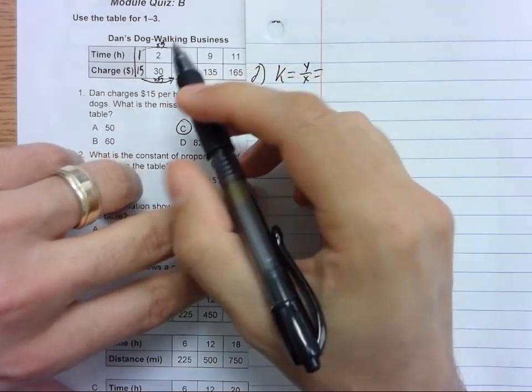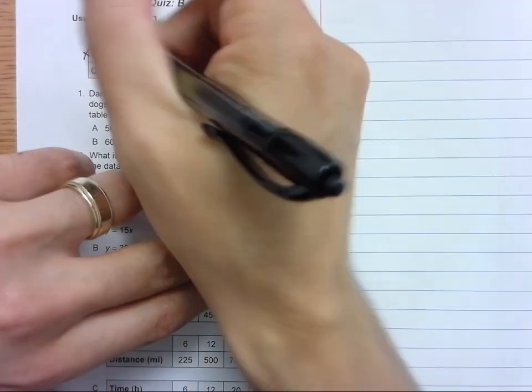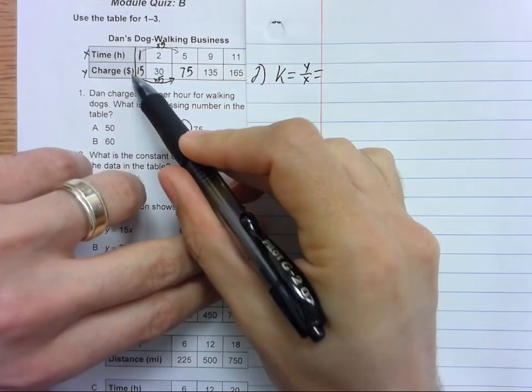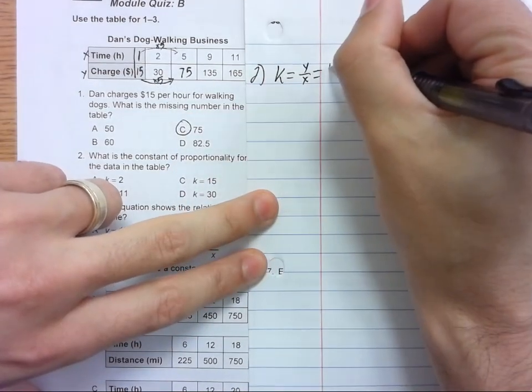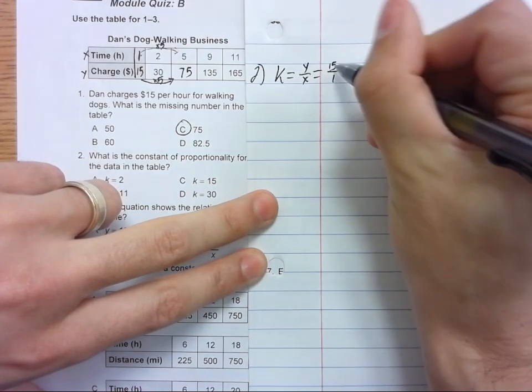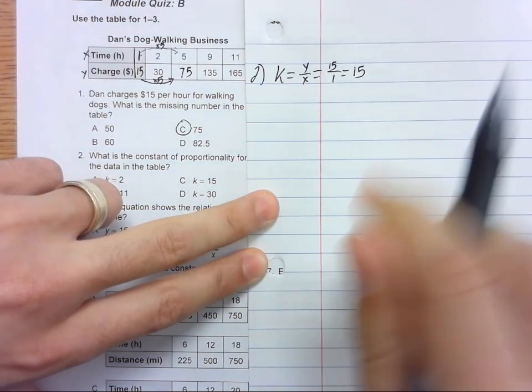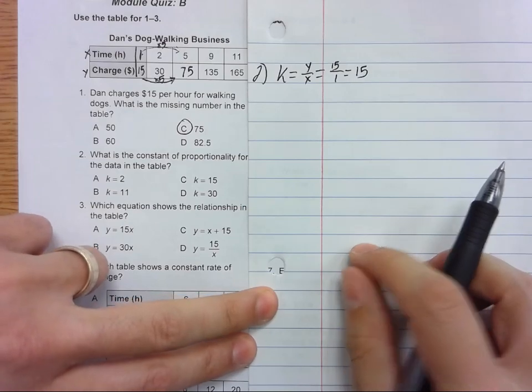Time is our independent variable, which means the charge depends on the time. So the Y would be 15 over the X which is 1. 15 over 1 is 15. So the constant answer for two has to be C.